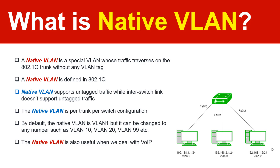Another important point is that by default the native VLAN is always VLAN 1. However, we can change it through configuration to any other VLAN, starting from 0 up to 4095 — though 0 and 4095 cannot be used — giving us a total of 4094 options to configure the native VLAN.